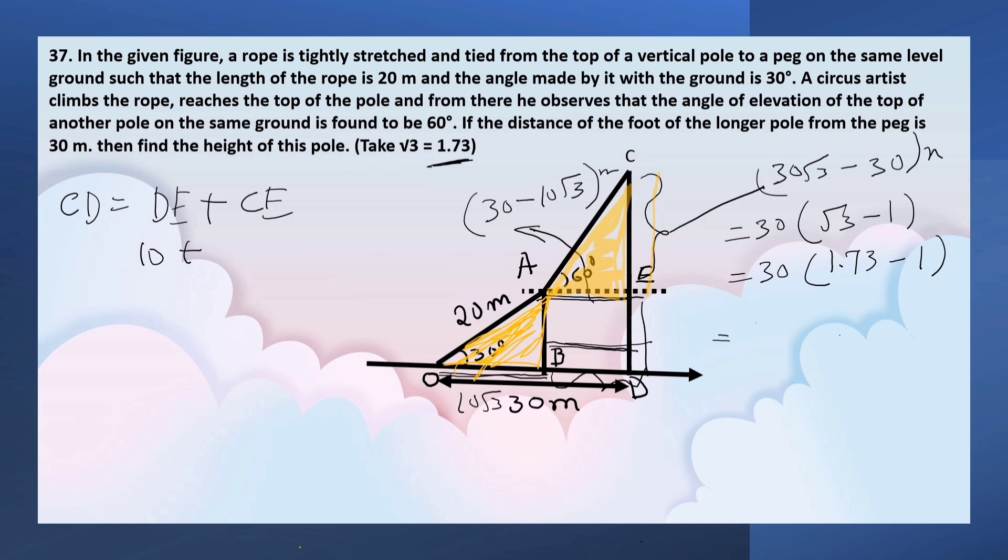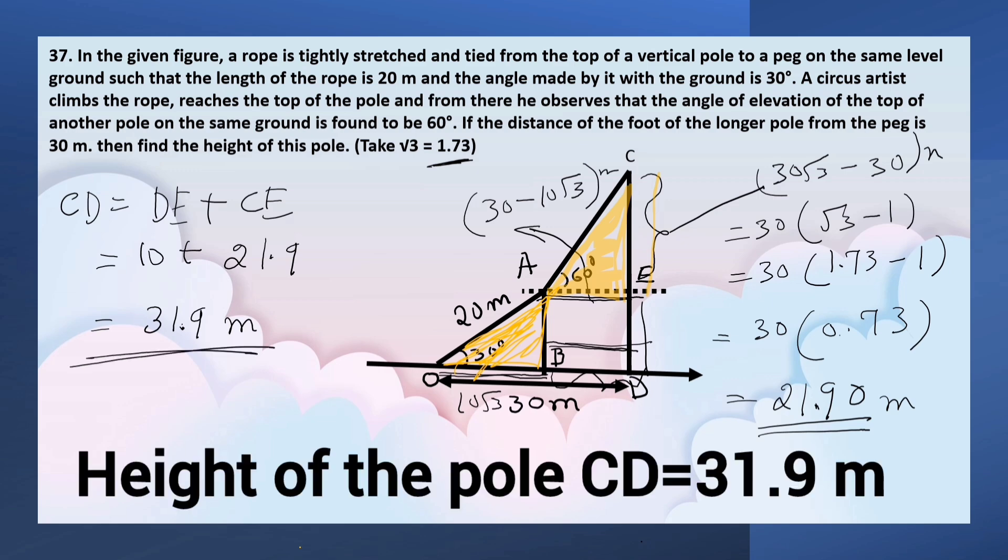That equals 30 times 0.73, which equals 21.9 meters. So CE equals 21.9 meters, and 10 plus 21.9 is 31.9 meters. Therefore, the height of pole CD is 31.9 meters.